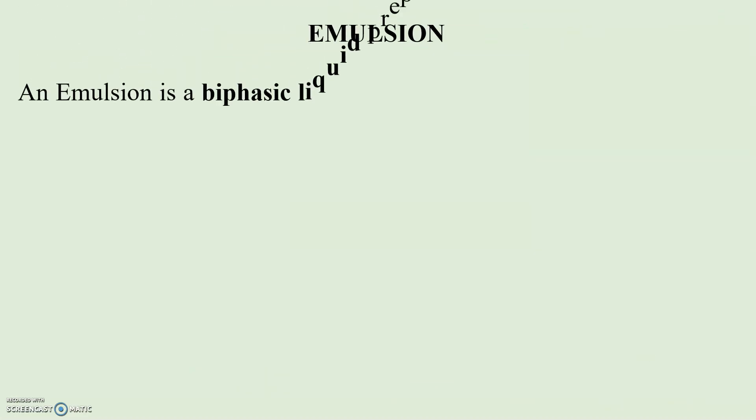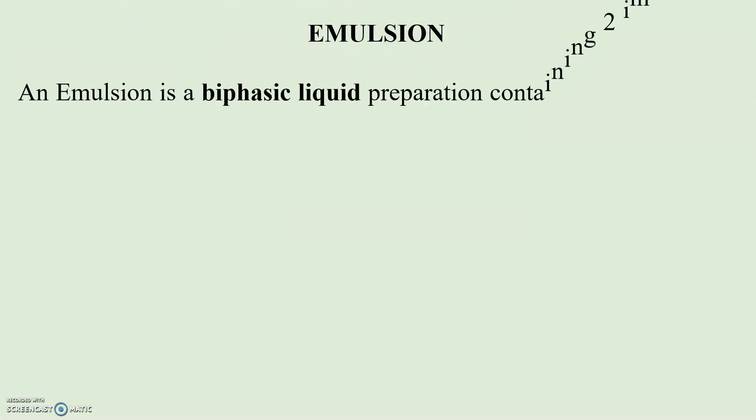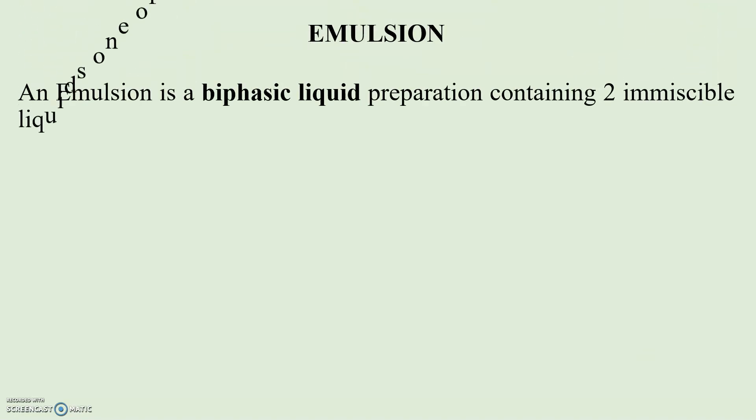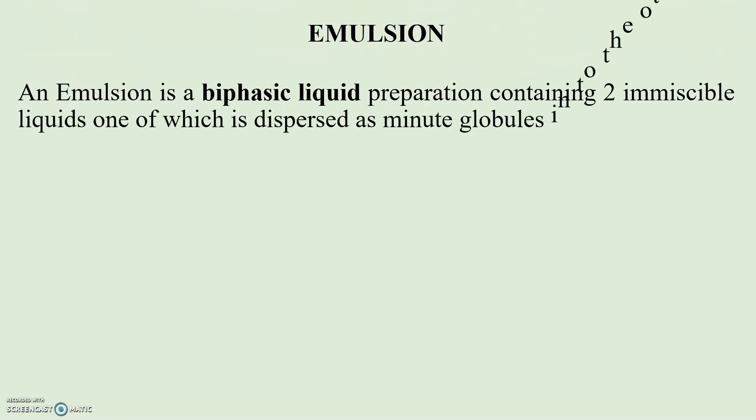Now let us see what is emulsion. An emulsion is a biphasic liquid preparation containing two immiscible liquids, one of which is dispersed as minute globules into the other.